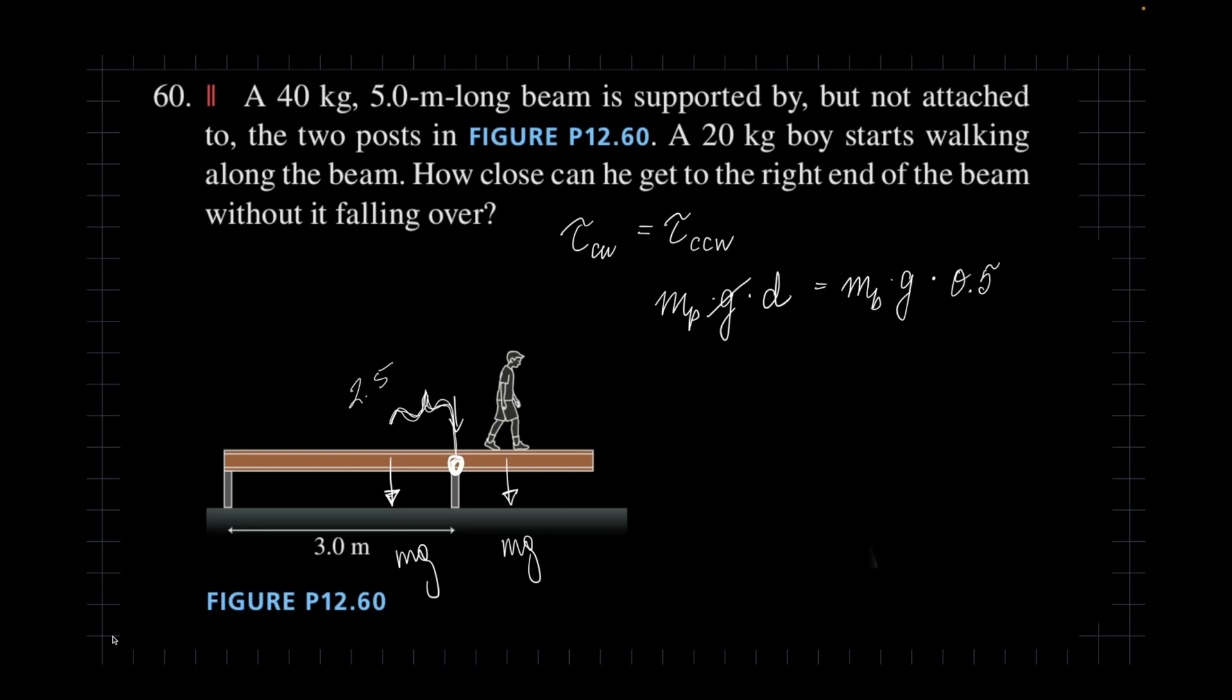And then when I look at the masses, beam is twice the mass of the boy. So I'm just going to cancel the mass of the boy and this will be two masses of the person.